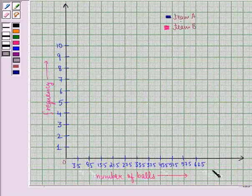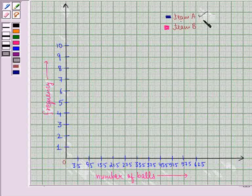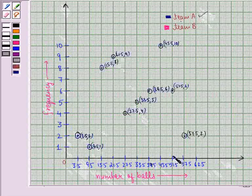This is the graph and the x-axis we have taken number of balls, y-axis we have taken the frequencies. So now we will plot all the points first of all for team A. So these are all the points for team A. Now we will join all these points to obtain frequency polygons for team A.